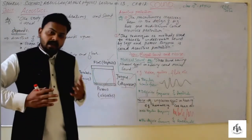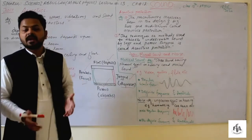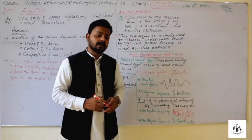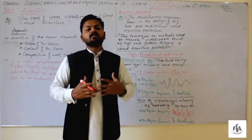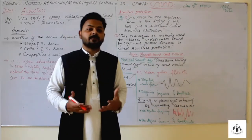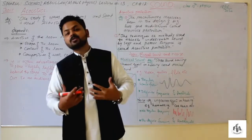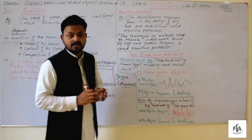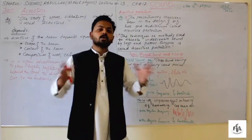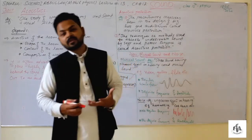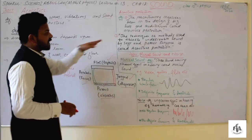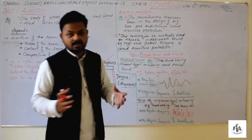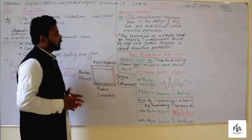Acoustic production means the precautionary measures taken in the design of big halls and auditoriums. It means how we can keep a room or building safe from unnecessary undesirable sounds. We can also define it as the technique or method used to absorb undesirable sound by soft and porous surfaces — this is known as acoustic production.